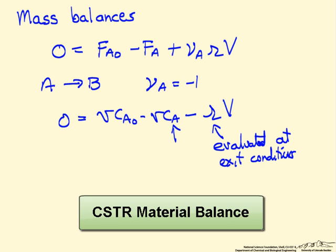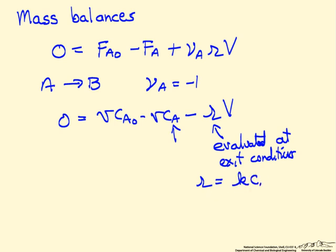For example, if this were a first order reaction, R would be K times CA, where CA is the concentration in the reactor.